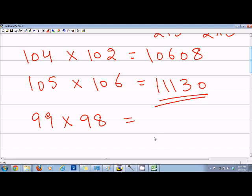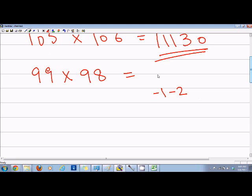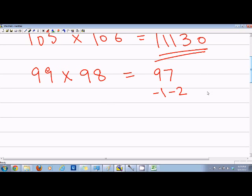Write minus 1 minus 2, and that equals minus 3, so we will subtract that from 100, which gives 97. Then multiply these two numbers together: minus 1 times minus 2 equals 2. So the answer is 9702. This is not magic, there is a proof to it.